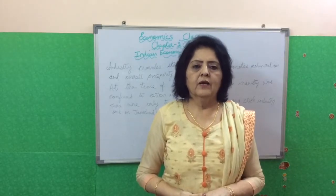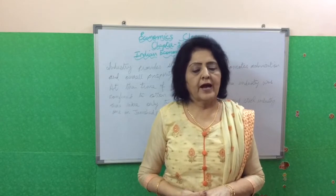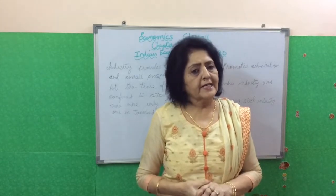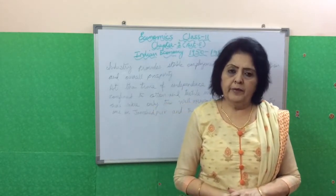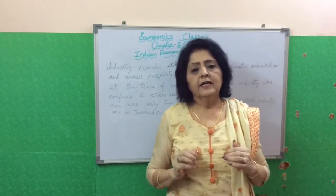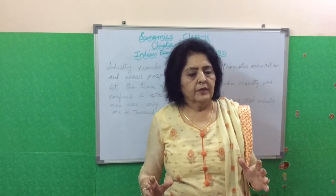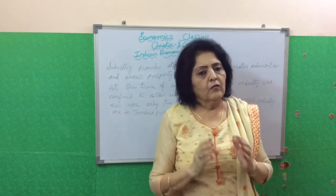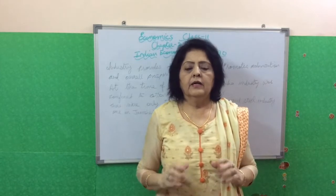Hello friends, welcome to my channel Enthusiastic Learner. Continuing with chapter 2, part 5, today we are going to discuss industry. We have already seen that there was heavy dependence on agriculture for employment — about 65% of the population were dependent on agriculture for their livelihood, but the income earned from agriculture was very low, that is, the GDP the nation earned from agriculture was very low, leading to low national income and low per capita income.